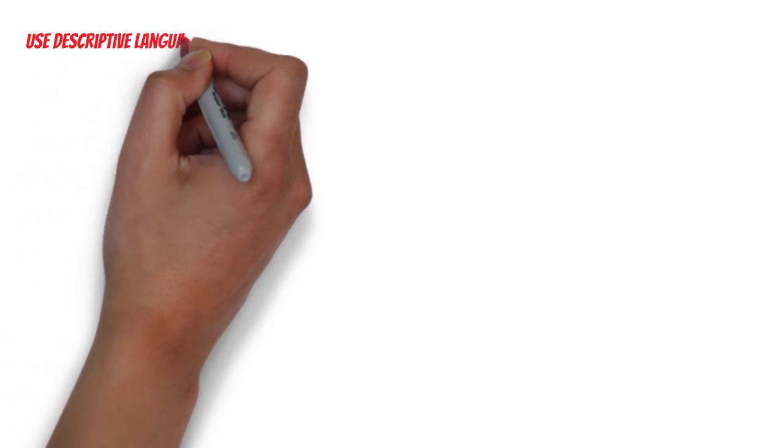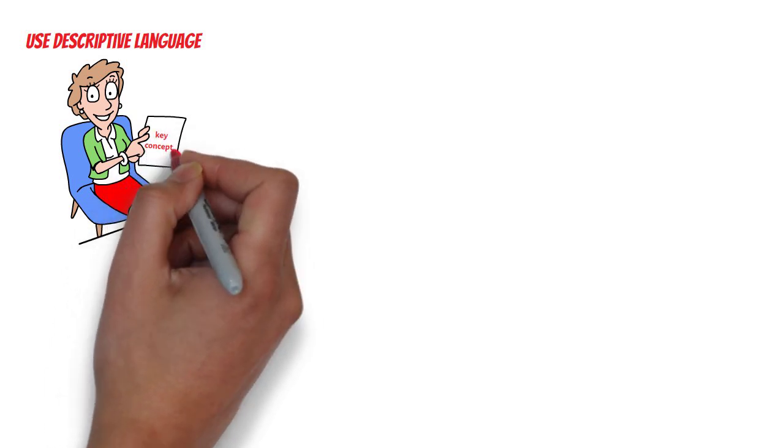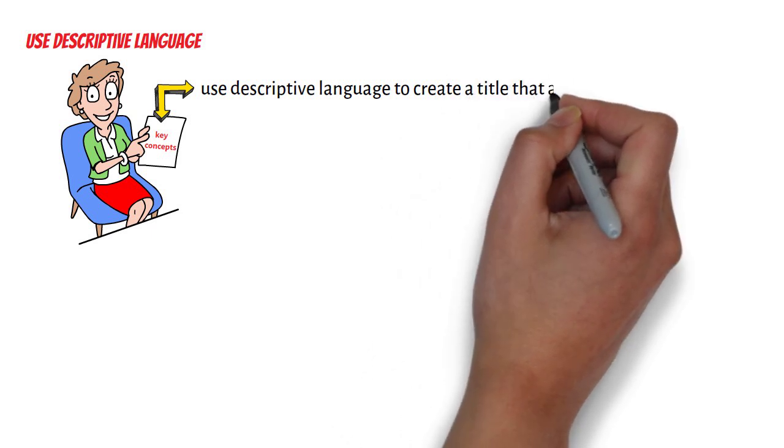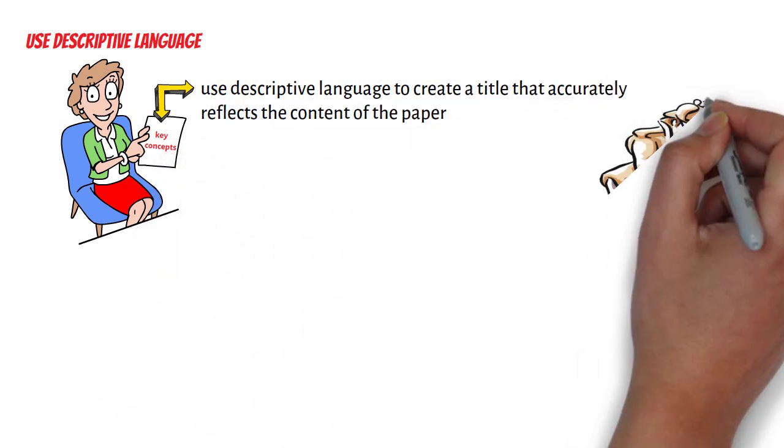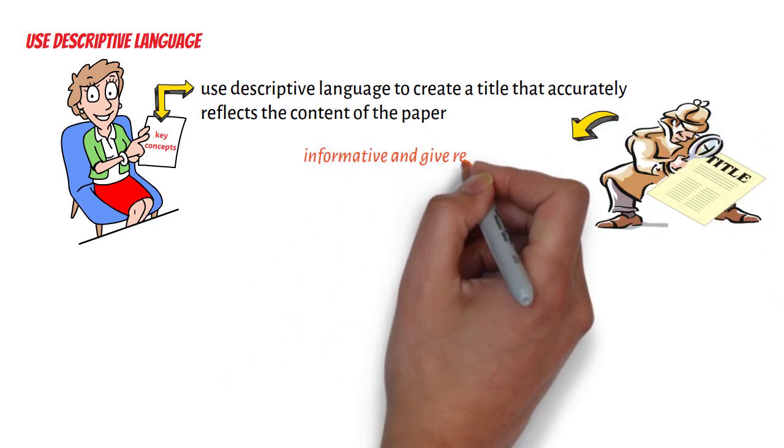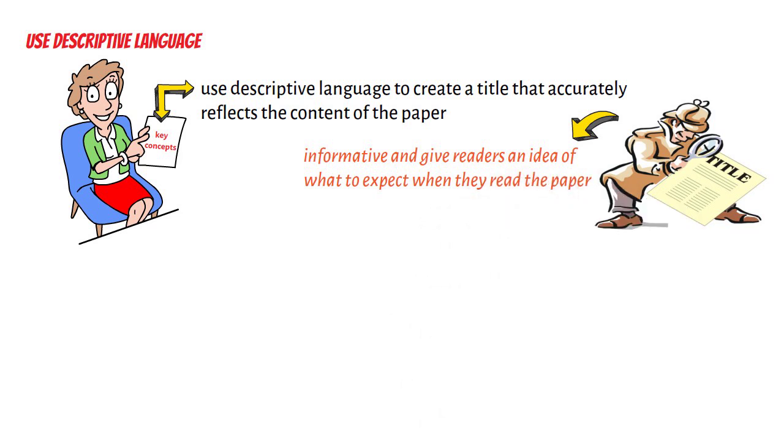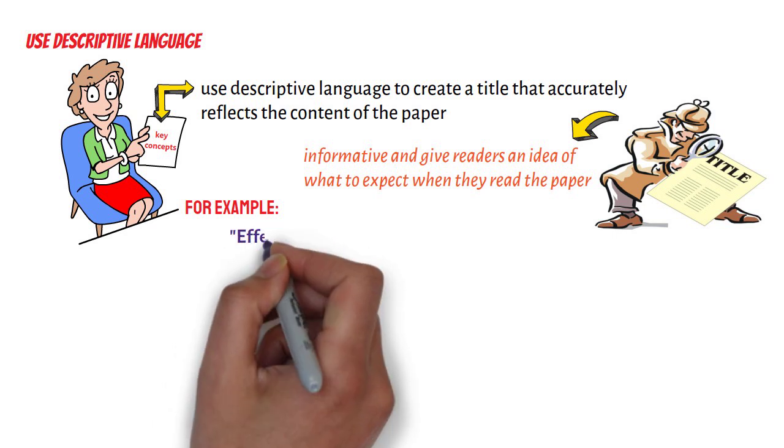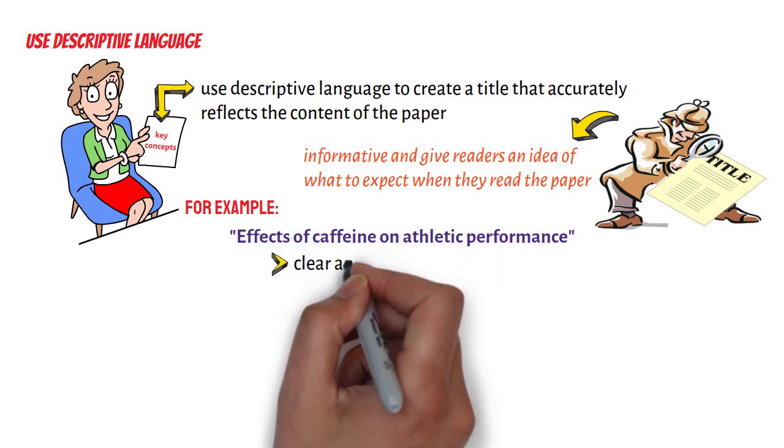Second, use descriptive language. Once you have identified the key concepts, the next step is to use descriptive language to create a title that accurately reflects the content of the paper. The title should be informative and give readers an idea of what to expect when they read the paper. For example, a title like 'effects of caffeine on athletic performance' is clear and informative.